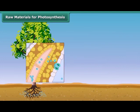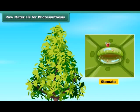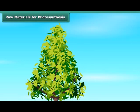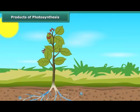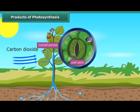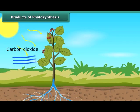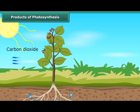Likewise, carbon dioxide from air is taken in through the tiny pores present on both surfaces of the leaves. Such pores are called stomata, and these pores are surrounded by guard cells. After reaching the leaf, carbon dioxide and water react in the presence of sunlight to form carbohydrate.